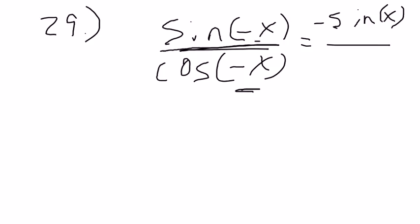When you have cosine of a negative angle, you can change it into just cosine of a positive angle. And this is all from page 372.